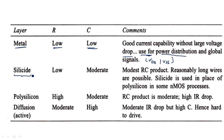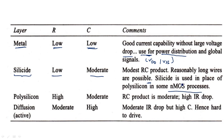Silicide and polysilicon are similar; in the absence of polysilicon material we use silicide. The resistance of silicide is low and the capacitance is moderate, giving a modest RC product and moderate time delay. Reasonably long wires are possible, and silicide is used in place of polysilicon in some NMOS processes.